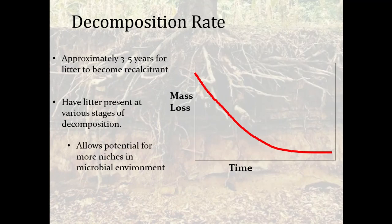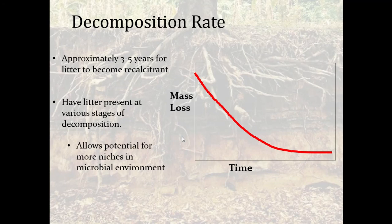Decomposition rate — it takes approximately three to five years for litter to become recalcitrant, meaning the labile carbon has been used up and organisms take much longer to extract anything from that material. The mass loss follows a curve of rapid decrease early on, which slows significantly over time. It's important to have litter present in various stages of decomposition, as this allows for more niches in microbial environments and supports different communities.